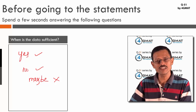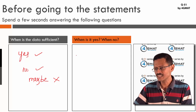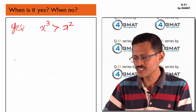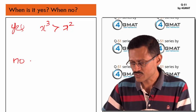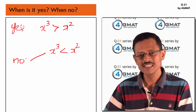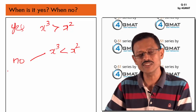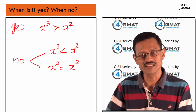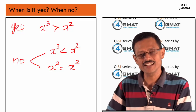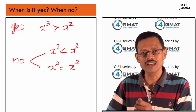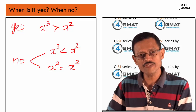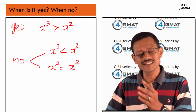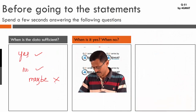The second question: when do we answer yes, and when do we answer no? Yes is obvious — when x³ > x². We answer no in two cases: when x³ < x², or when x³ = x². Even when x³ equals x², the answer is no, because the question asks if x³ is greater. Many people incorrectly say the data is insufficient when x³ = x², but it's actually a definite no.